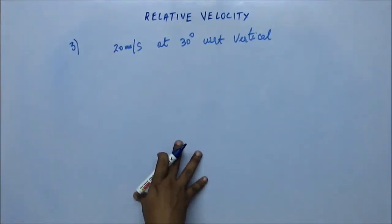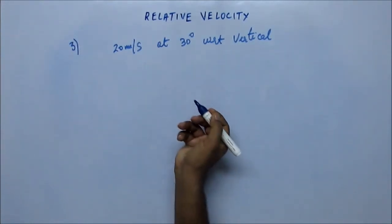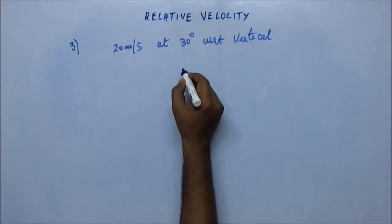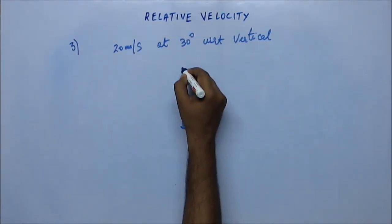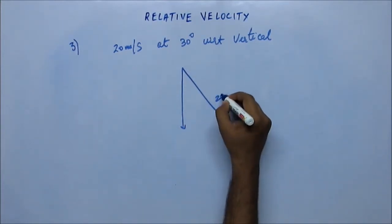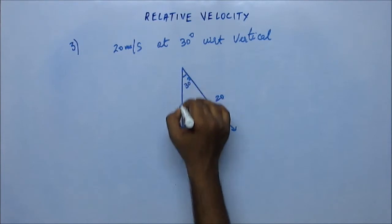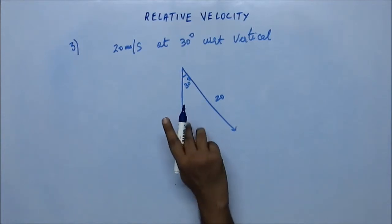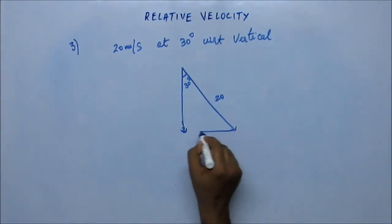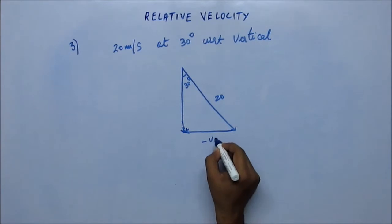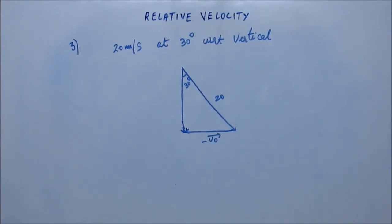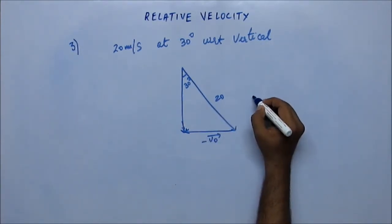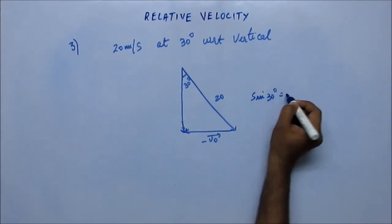Let the velocity be V. You have to draw the vector triangle. Rain is given as 20 meters per second at 30 degrees. This is the resultant relative velocity vector. They are asking what is the velocity of the man, so this is the minus V₀ vector. From here you can find the magnitude of V₀ using simple trigonometry: sine 30 degrees equals mod of V₀ divided by 20.